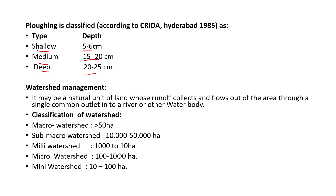Watershed management: a watershed is a natural unit of land whose runoff collects and flows out through a single common outlet into a river or other water body. Classification of watersheds: macro watershed (greater than 50,000 hectare), sub-macro watershed (10,000–50,000 hectare), mini watershed (1,000–10,000 hectare), micro watershed (100–1,000 hectare).